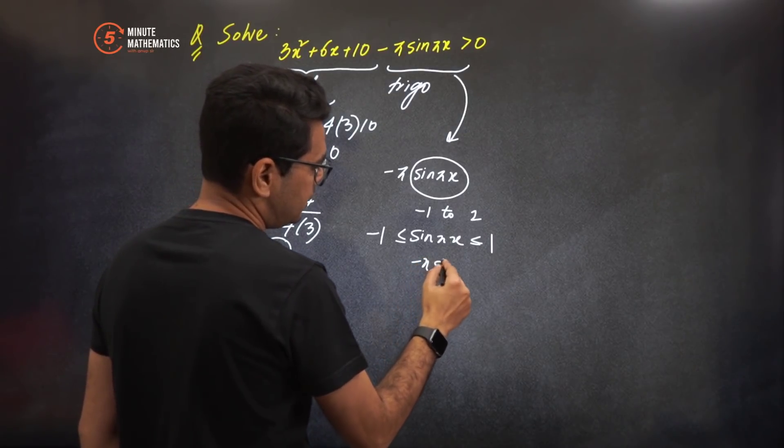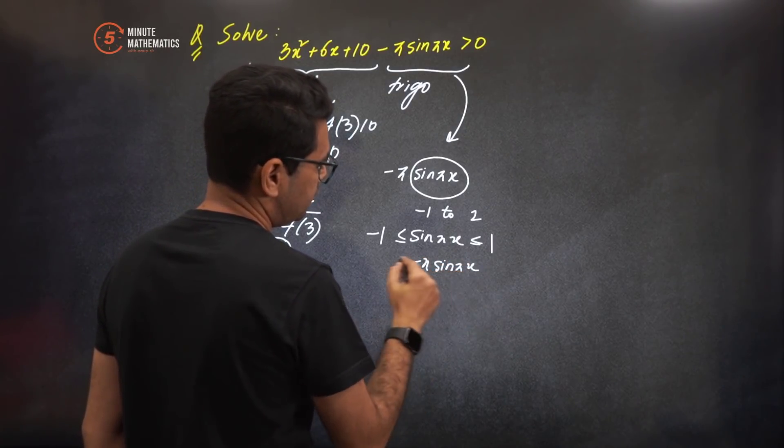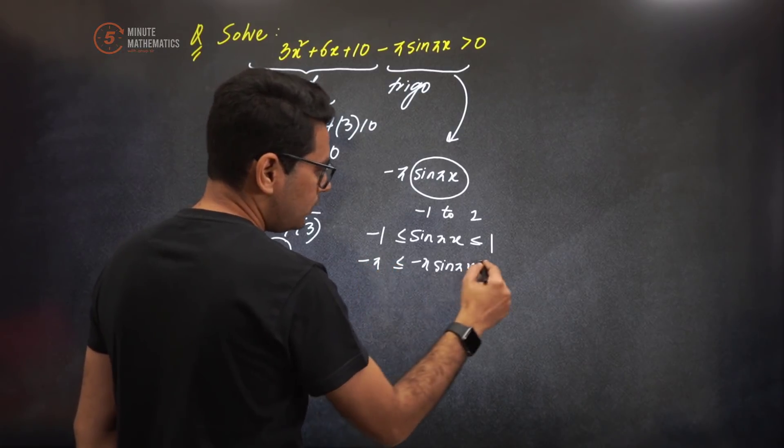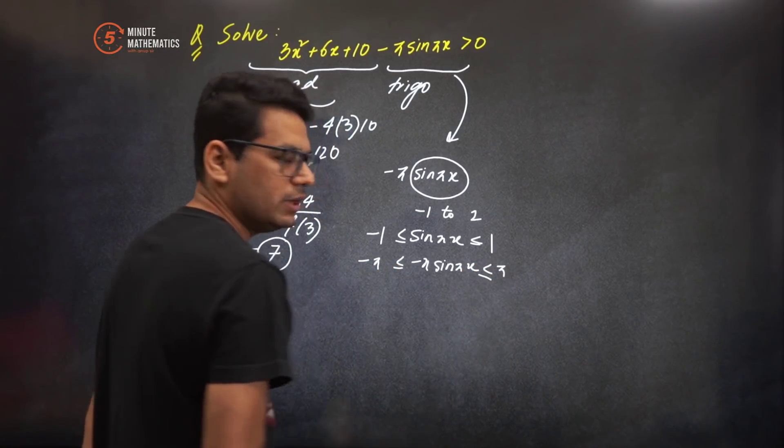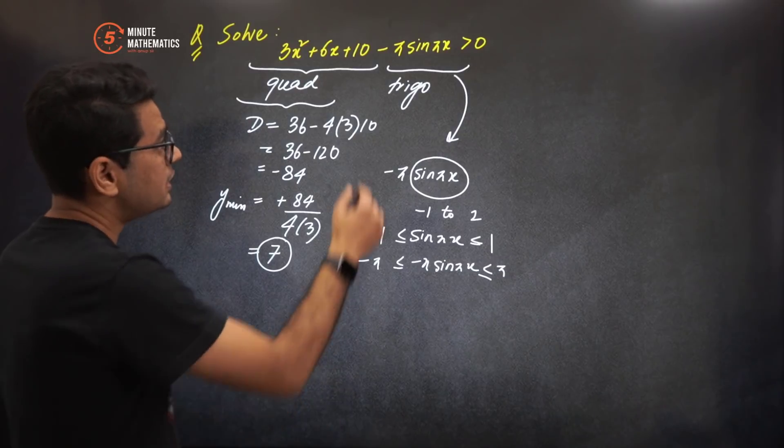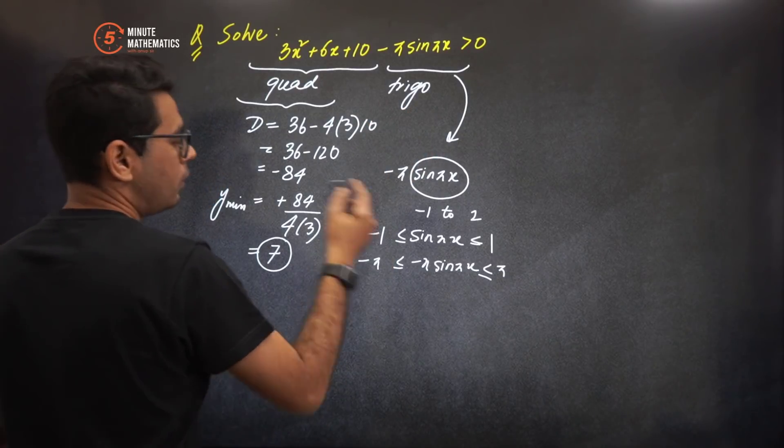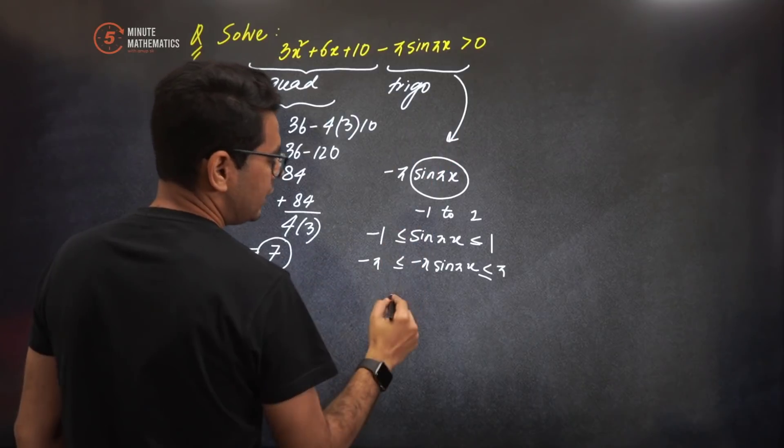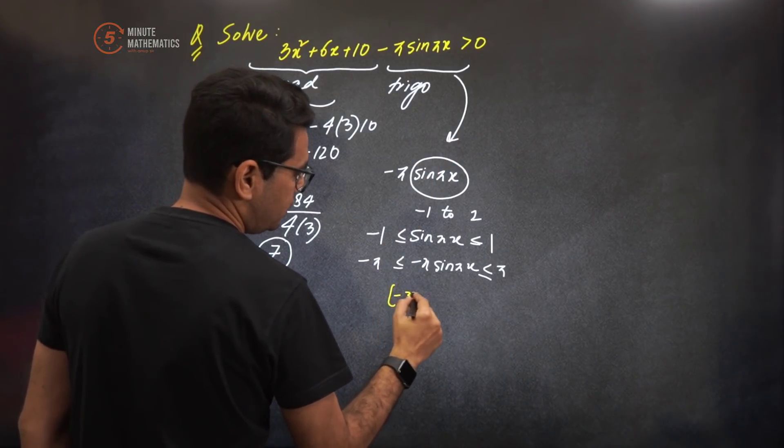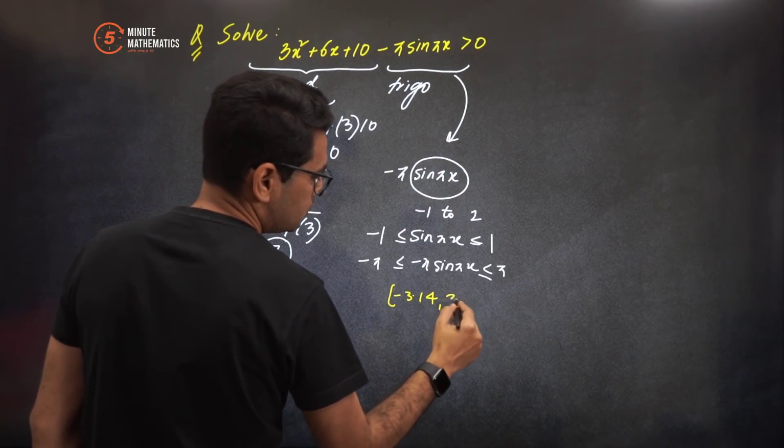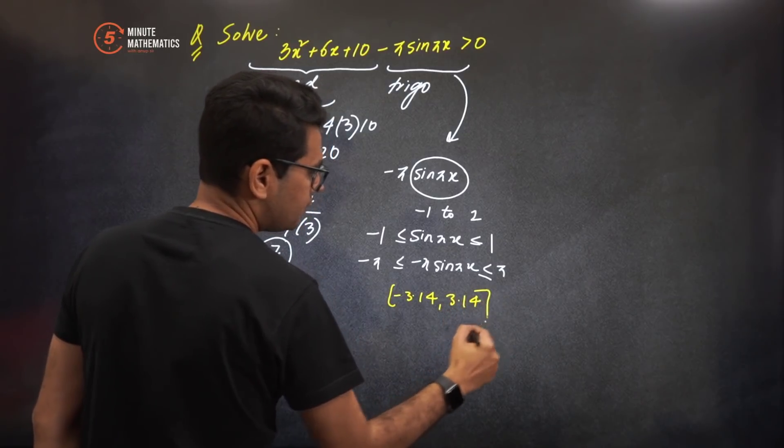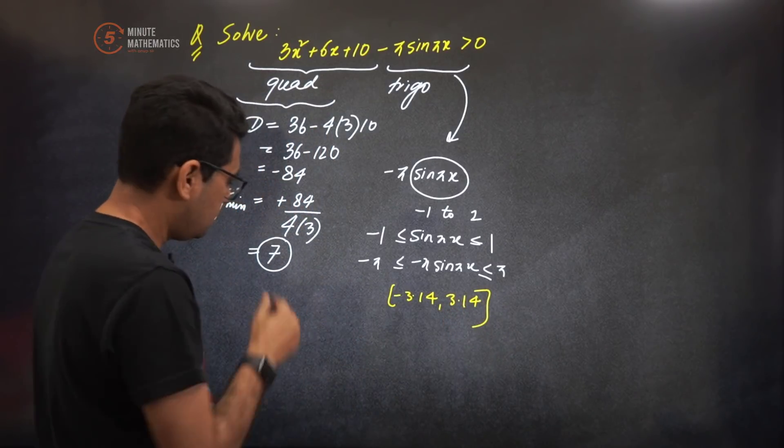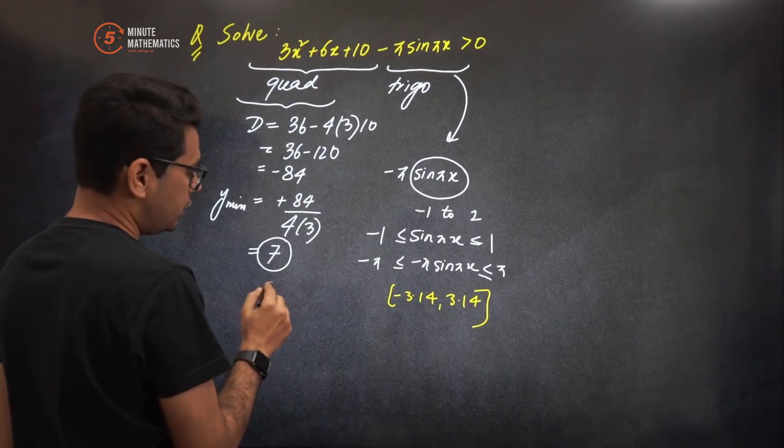Or if I just multiply with -π, it's going to be from -π to π only. So that means your trigonometric component here will take some values lying between -3.14 to 3.14 approximately. Whereas this quadratic which you have already got is 7.